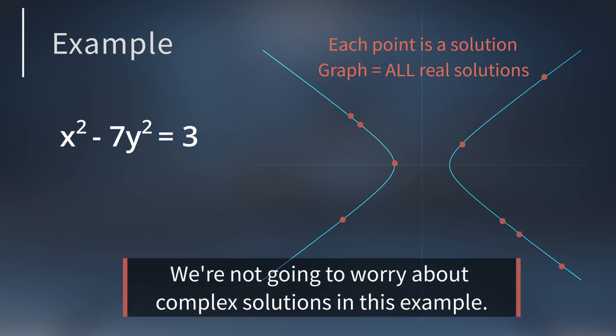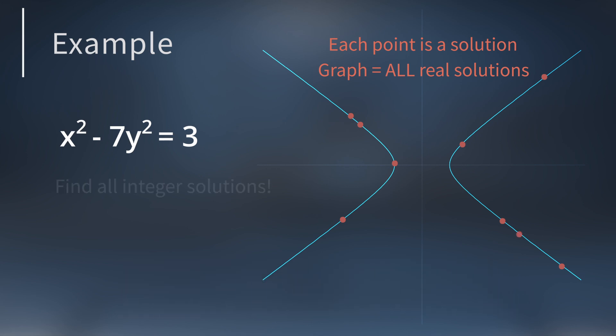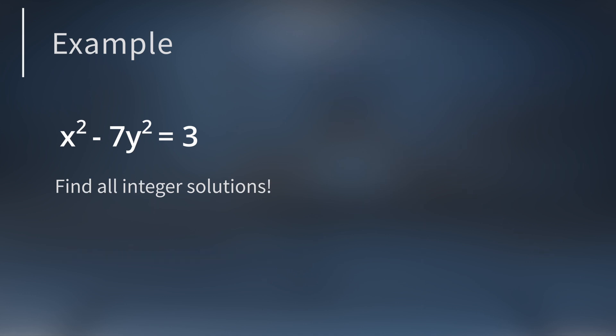This problem becomes more challenging in number theory because here the goal is to find all integer solutions. In other words, are there any points on the hyperbola where both coordinates are integers? When looking for just the integer solutions, you call this a Diophantine equation.